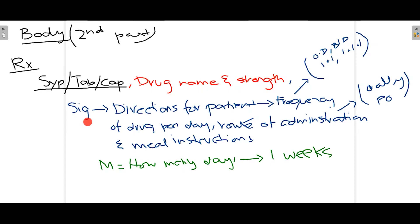Then comes Sig, which means instructions or directions for the patient. In this we write down frequency — how many times the drug has to be taken per day. You can write it in two forms: either OD for once a day or BID for twice a day. Because these abbreviations can be difficult for patients to understand, we can also write it as 1+1 meaning 2 times a day, or TID written as 1+1+1 for 3 times a day. Then we write down the route of administration — how the drug is to be taken.